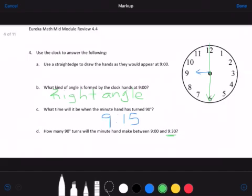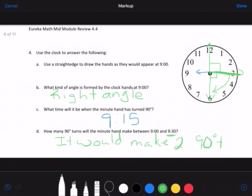If I start with the minute hand up at the 12, I would make one 90-degree turn to get to 9:15. Then a second 90-degree turn, going this way, to get to 9:30. So it would make two 90-degree turns, and that's number four.